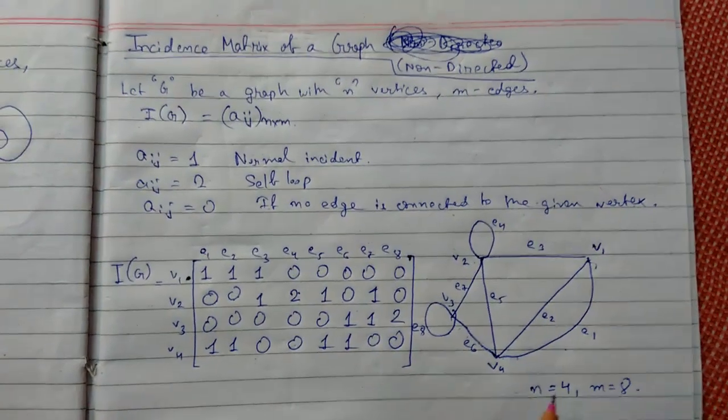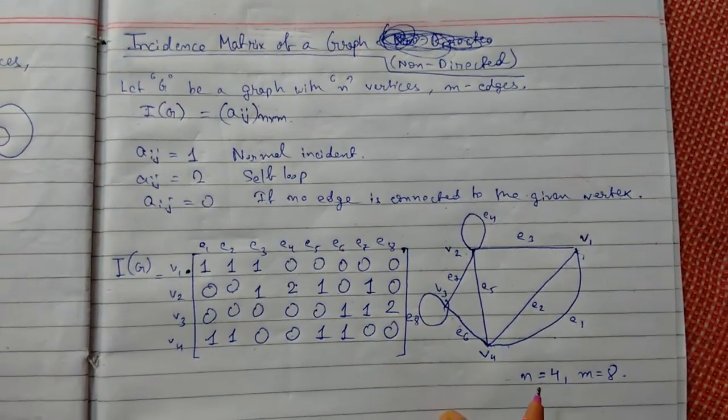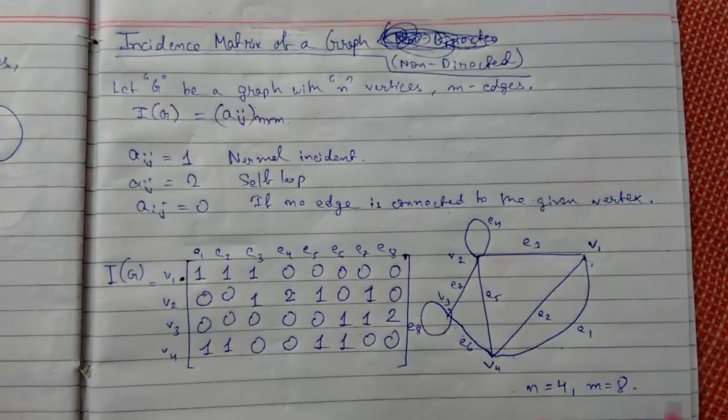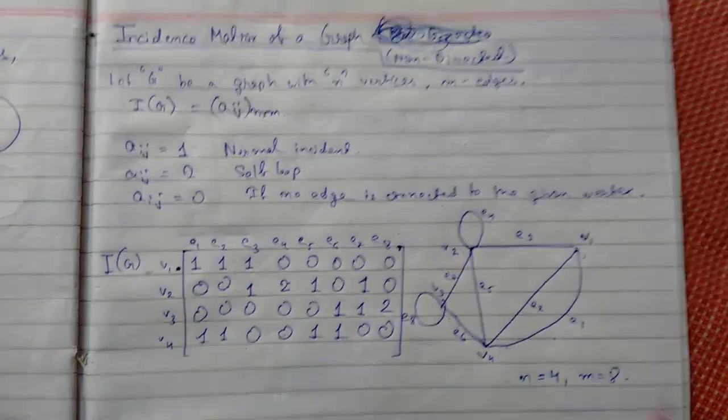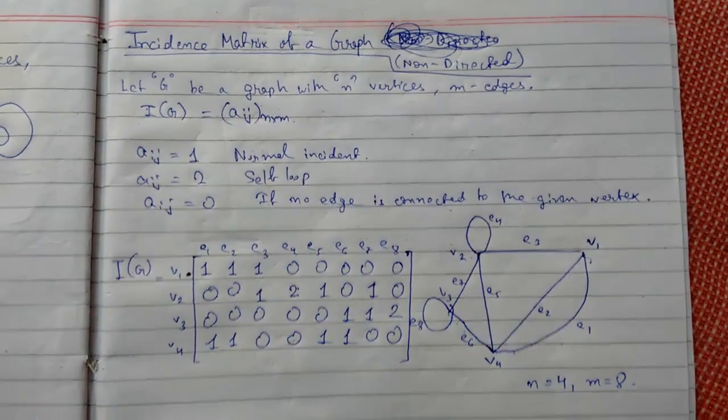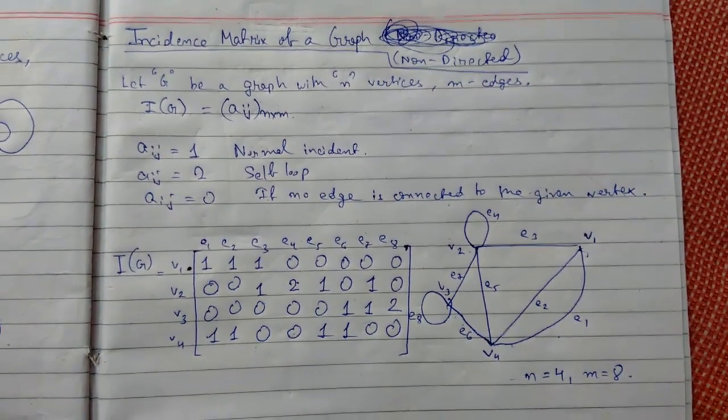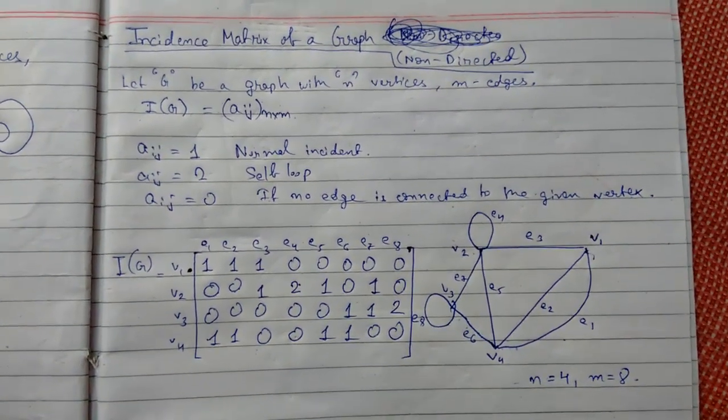So this was the incidence matrix of a non-directed connected graph. That was the matrix. Thanks for watching — hit the thumbs up button.